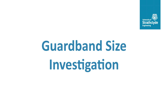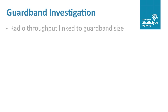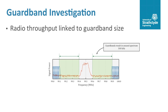Next, an investigation was carried out to explore what guard band size would be required in order to prevent the secondary user interfering with the FM stations. The throughput achievable with the radio is linked to the number of active channels and therefore the size of the frequency guard band used to protect the primary user signals. A narrower guard band will lead to higher throughput rates; however, reducing it could result in interference being caused to commercial off-the-shelf FM radio receivers.